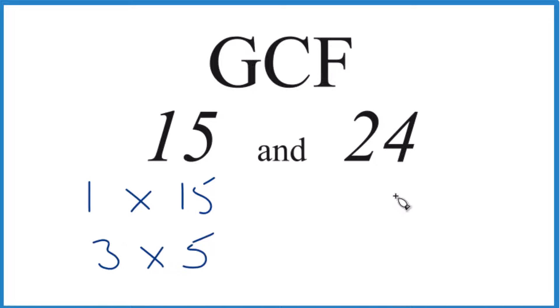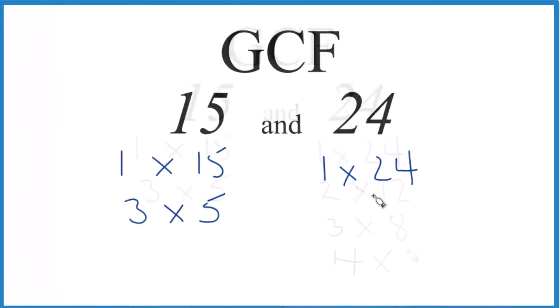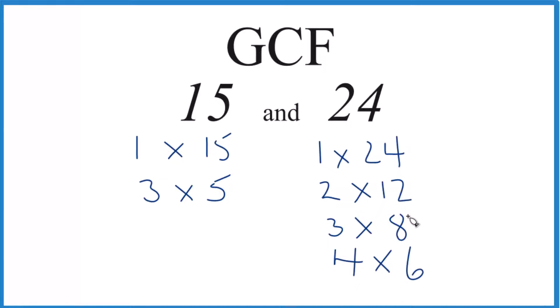For 24, there are quite a few. 1 times 24 and all of these. So we have the factors for 15 and 24. Let's look at what's in common. So 1 goes into 15 evenly and 1 goes into 24 evenly. So that's a common factor of 15 and 24.